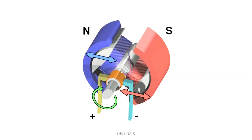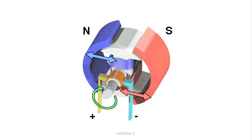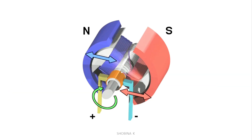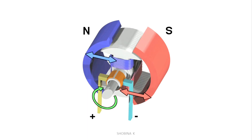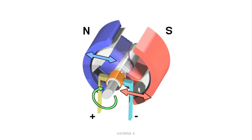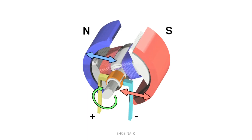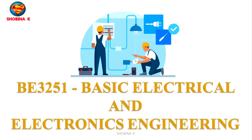A DC motor is an electrical machine that converts electrical energy into mechanical energy. In a DC motor the input electrical energy is a direct current which is transformed into mechanical rotation. In this video let's learn about the DC motor.